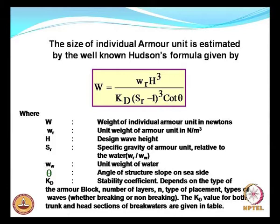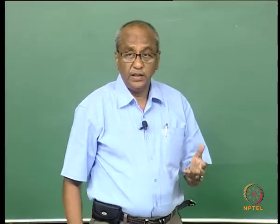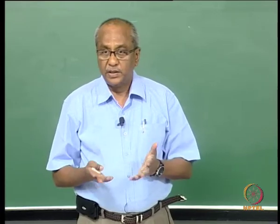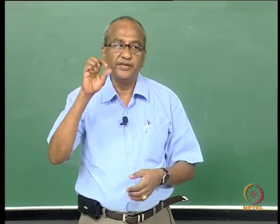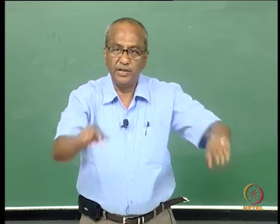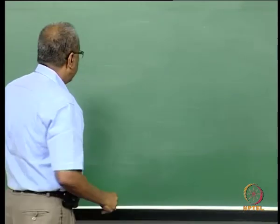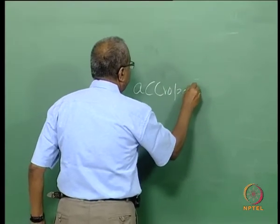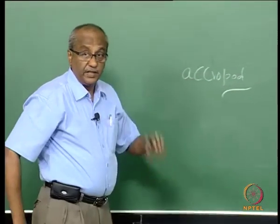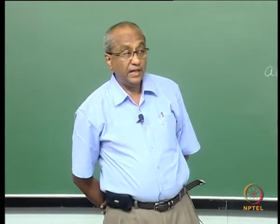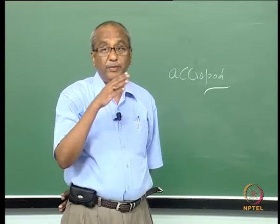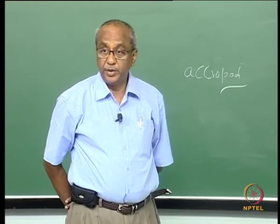The number of layers has already been explained. Regarding type of placement — for example, stones like tetrapods can be placed randomly; the only requirement is that they must be placed in two layers. But if you look at the acropod, you cannot place it randomly. It has a specific regular way of placing the armour unit, and it is a single layer.